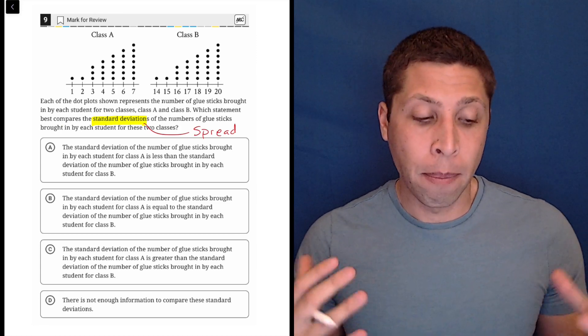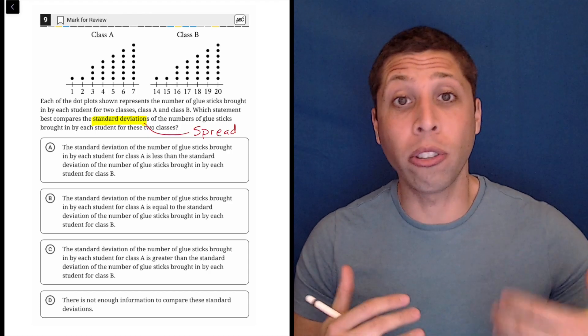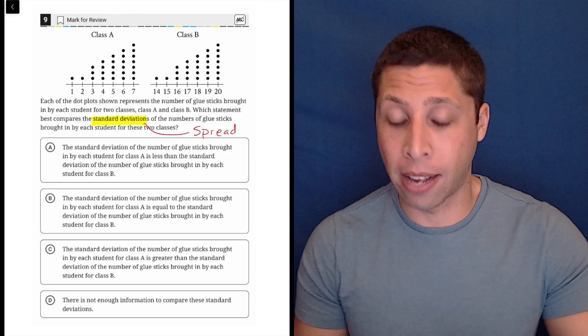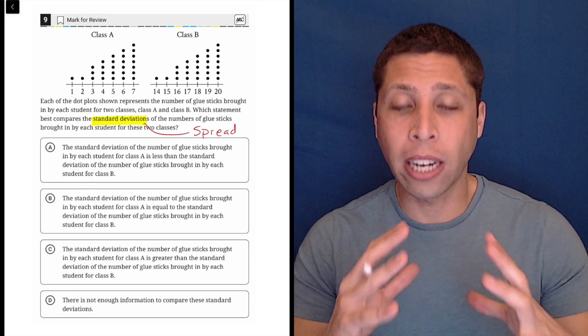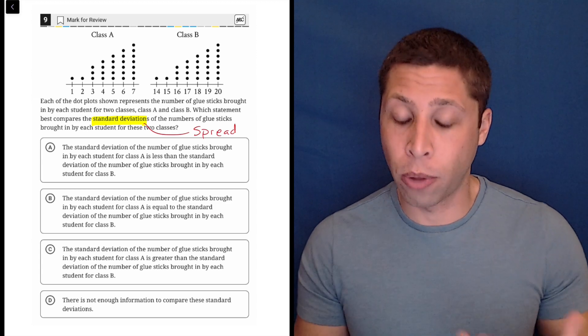There's a way to calculate this, but on the SAT we don't need to calculate, we just need to understand it and usually do a comparison like we're asked to do here. So the best thing to do is just look at the overall shape of the data. That's going to determine how these two things relate.